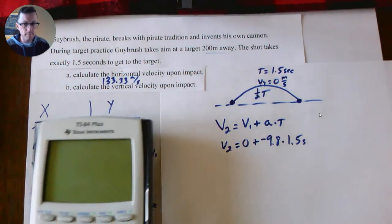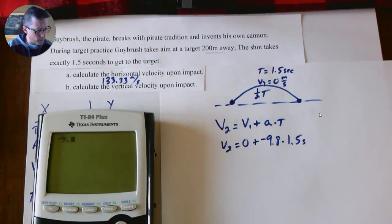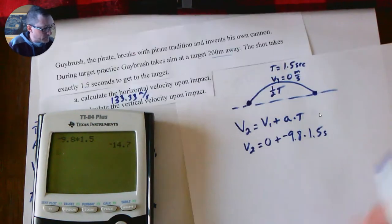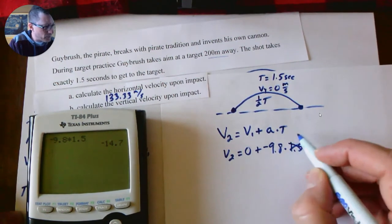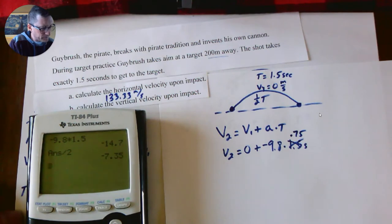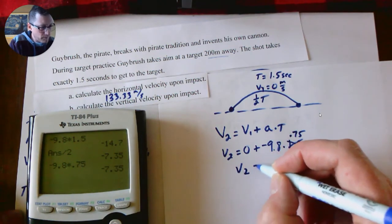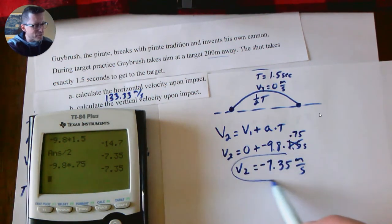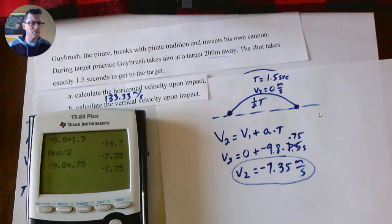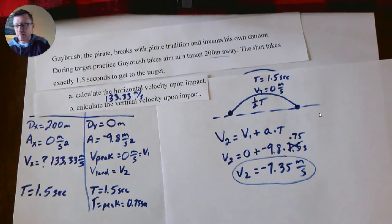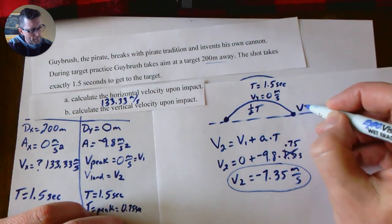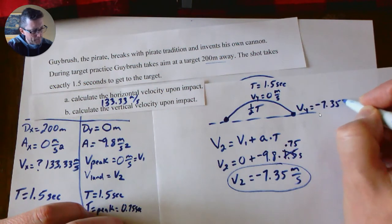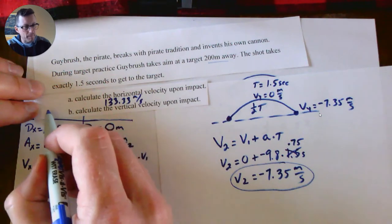So pull up your calculator. I have negative 9.8 times 1.5—oops, sorry, not 1.5. Wow, I made a mistake. That's the total—0.75. I'm just going to divide that by two. Let's double check: negative 9.8 times 0.75. Yep, so V2 equals negative 7.35. Now what I just did there actually shows you—you got a lot of numbers—always double check your work, make sure your numbers make sense. So V2 is negative 7.35. Well, where is that? That's right here. And that then is our answer for letter B.